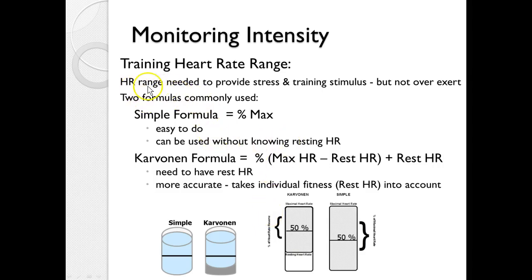Training heart rate range is the range needed to induce a training stimulus but not over-exert. Two formulas we use are the simple formula and the Karvonen formula. The simple formula takes a percentage of the max, with a range of 64 to 94%. The advantage is you can use it without knowing resting heart rate. The Karvonen formula is more complicated but gives a more accurate range because it takes into account the individual's resting heart rate, though it does require that resting heart rate measurement.